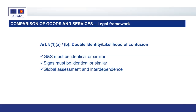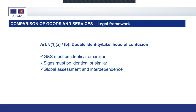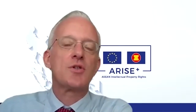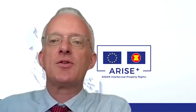In the EUIPO, this is governed by Article 8.1a. The comparison of goods and services is of relevance mostly for the assessment of identity, as it is a legal requirement. The outcome of the comparison plays an important role in defining the part of the public for whom likelihood of confusion is analysed, because the relevant public is that of the goods and services found to be identical or similar.